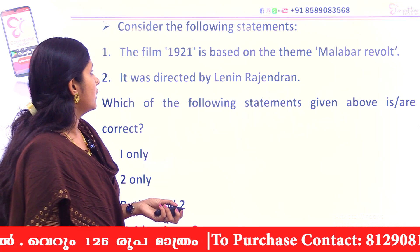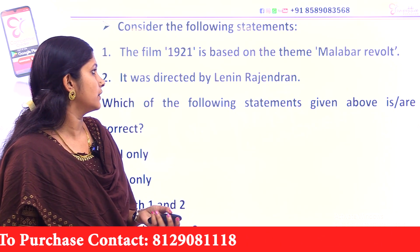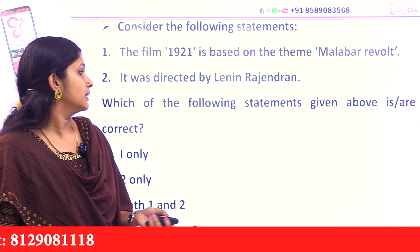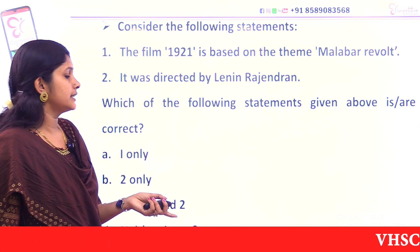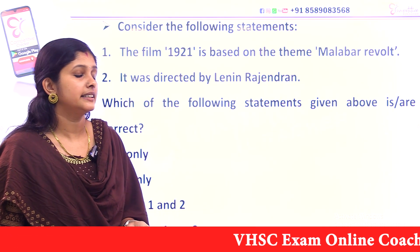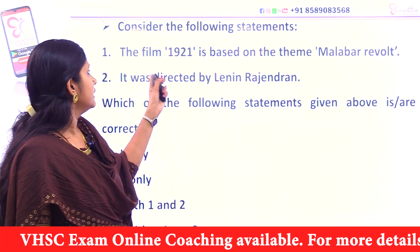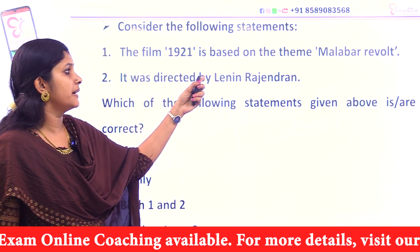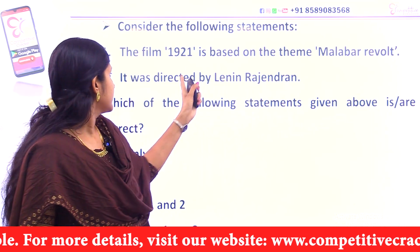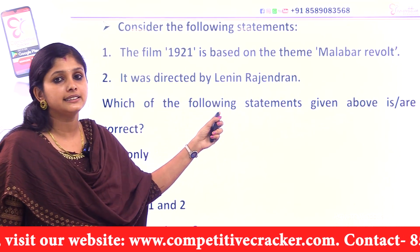Consider the following statements. First, the film 1921 is based on the theme of the Malabar revolt. Second, it was directed by Lenin Rajendra. The question is: 1921 is based on the theme of the Malabar revolt — that is correct. But it was directed by Lenin Rajendra — that is incorrect.